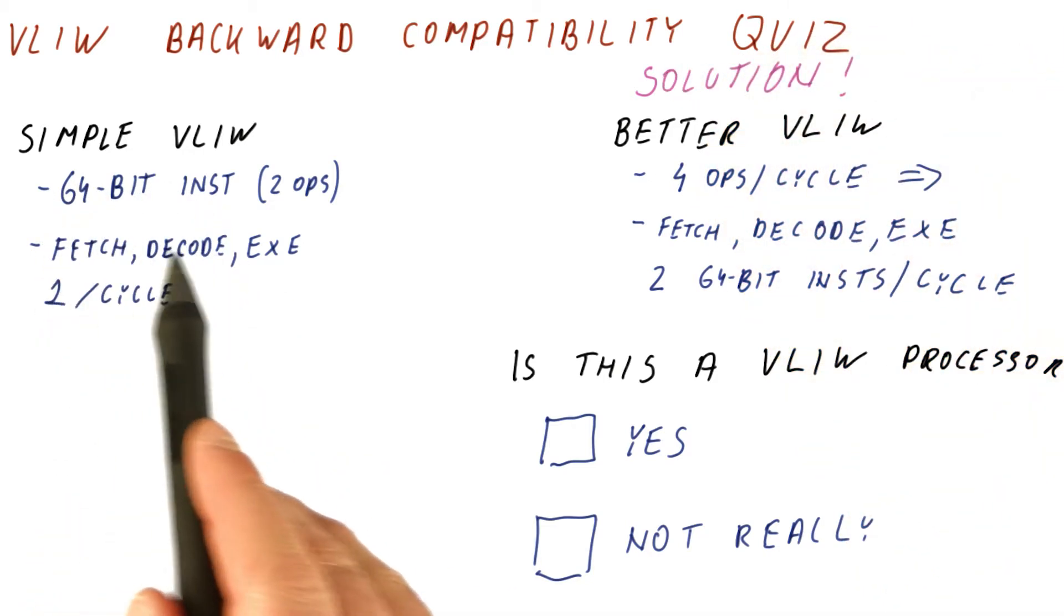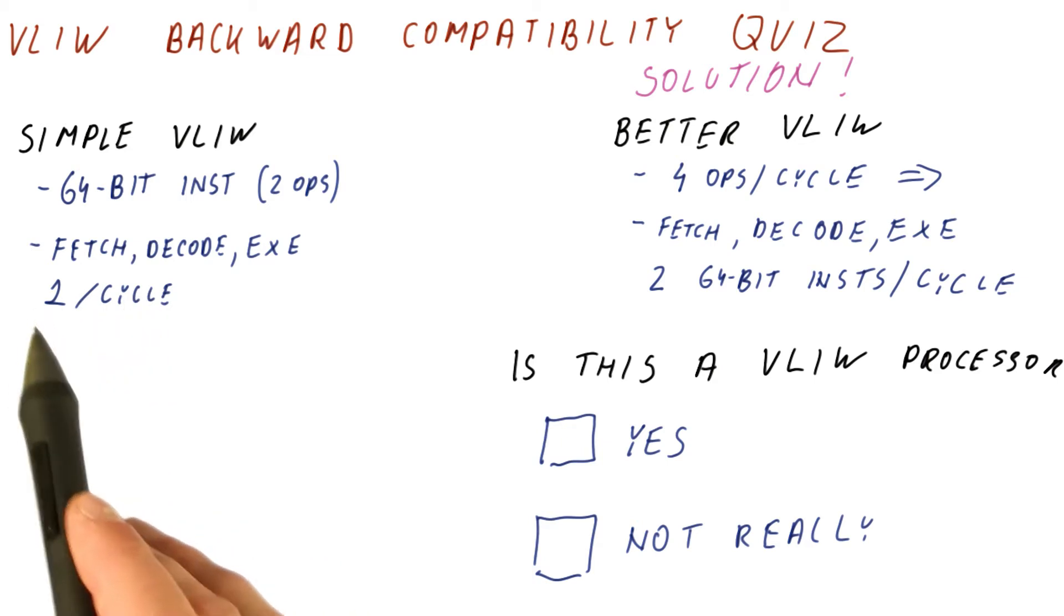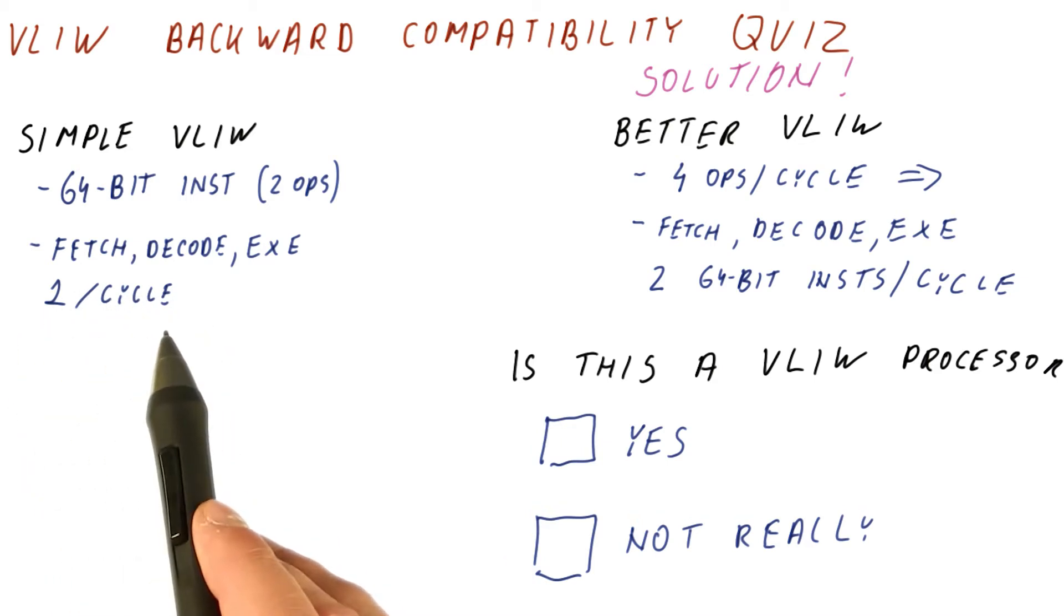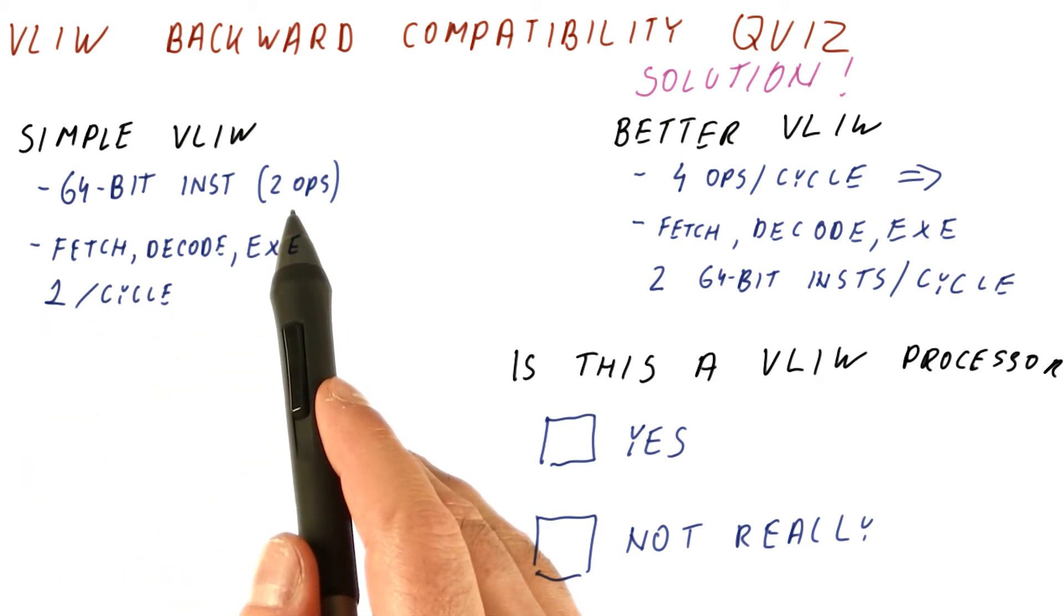We had a simple VLIW that had 64-bit instructions, doing one of those at a time. Each of those was equivalent to two normal operations.